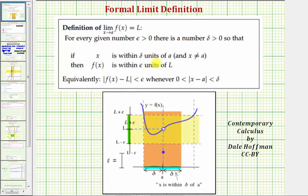We can also state this using absolute value inequalities. Remember, absolute value represents distance. So equivalently, the absolute value of f of x minus L — meaning the distance between f of x and L — is less than epsilon units, whenever the absolute value of x minus a, the distance between x and a, the value we're approaching, is less than delta and greater than zero. So we can use these two absolute value inequalities to determine a relationship between epsilon and delta.